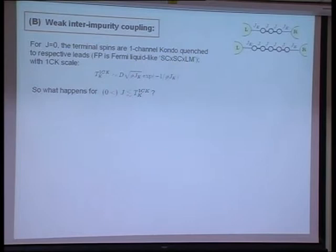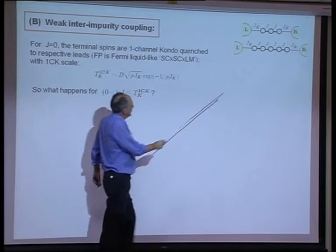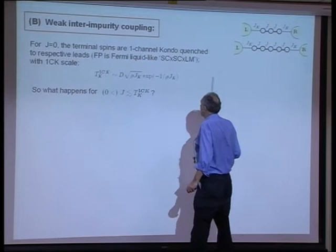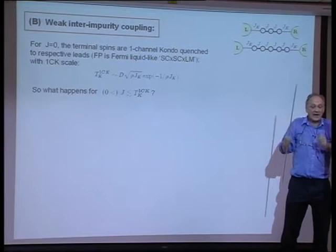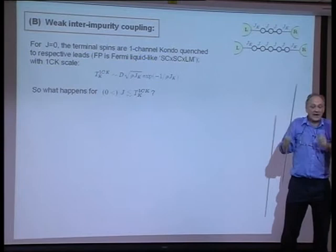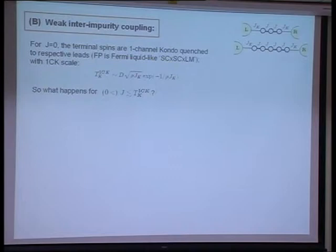Very briefly, comments on weak internal impurity coupling. For J equal to 0, the terminal spins are one-channel Kondo coupled to their respective leads, and the fixed point is Fermi-liquid-like — strong coupling times strong coupling times local moment — indicating that the terminal spins are quenched to form strong coupling Kondo singlets to their leads, leaving a free local moment in the interior. This happens on a one-channel Kondo scale, D sqrt(rho JK) times e to the minus 1 over rho JK. So what happens when J is asymptotically much less than that one-channel Kondo scale?